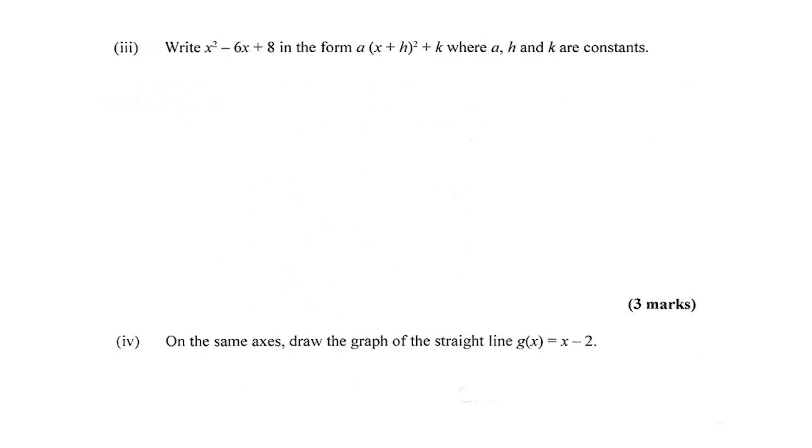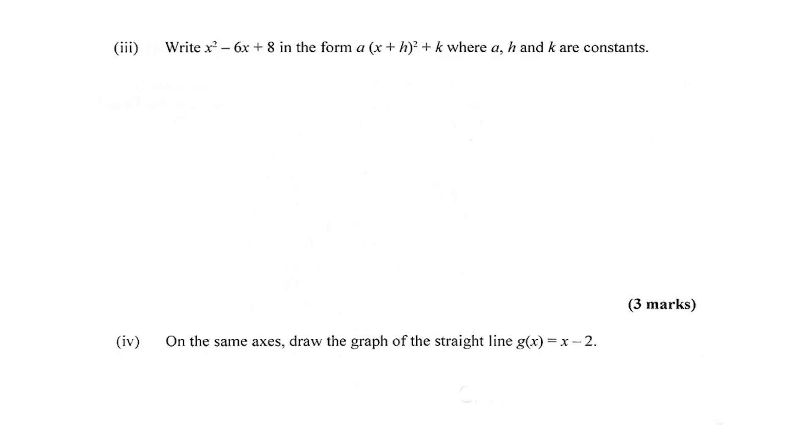What's next? Part 3: write x² - 6x + 8 in the form a(x + h)² + k, where a, h, and k are constants. So you want to complete the square. This is what we were doing in the last video. So let me complete this square now.